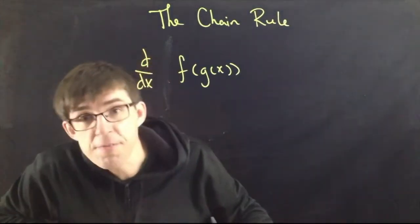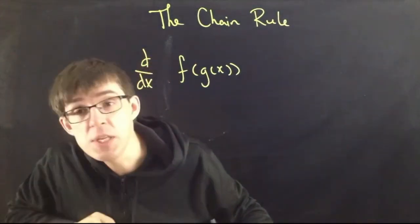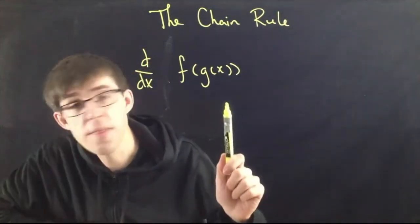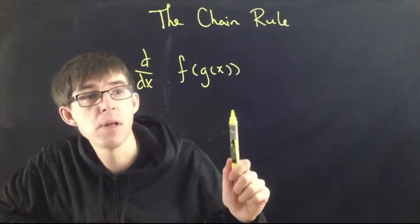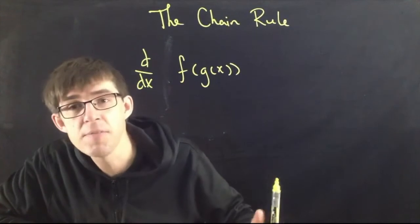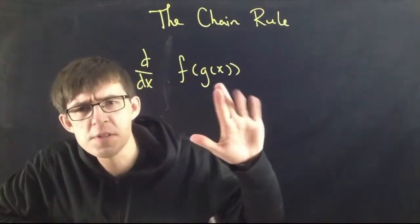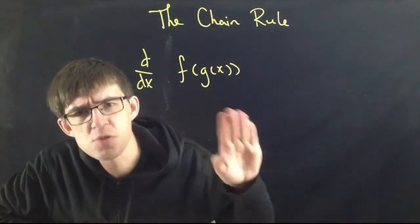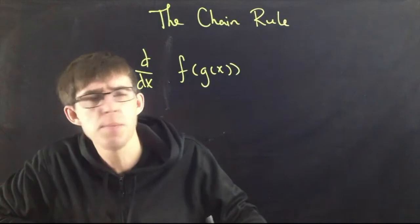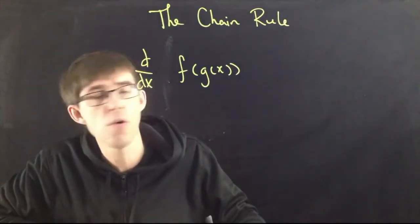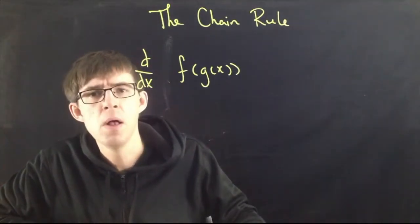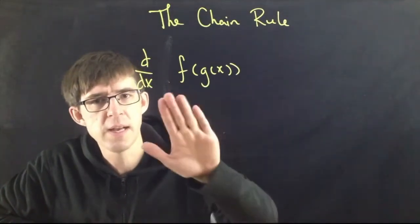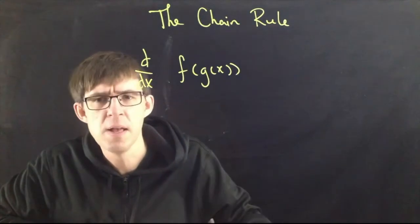The derivative of f of g of x — that is, you have one thing plugged inside of another thing. This is extremely useful; we're going to be using the chain rule all the time. A thing which depends on another thing — that's the idea behind this.